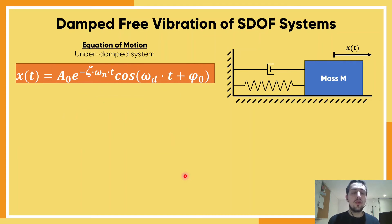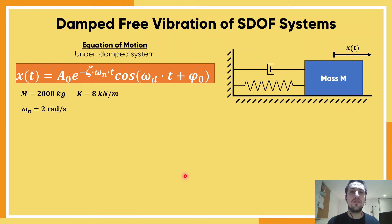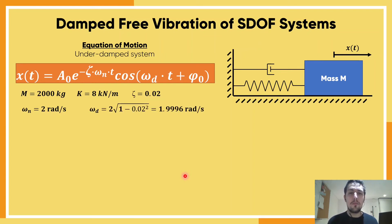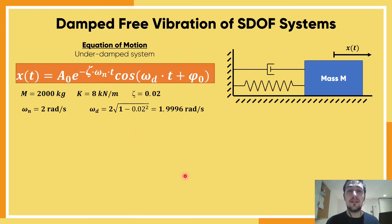Let's look at an example — the same one as the previous video. Mass of 2 tons, stiffness of 8 kN per meter, giving a circular natural frequency of 2 radians per second. If we assume a damping ratio of 2% (0.02), the damped circular natural frequency becomes 1.9996 radians per second. So even though there is a difference, it's not that big — we could reasonably say the damped natural frequency is essentially the same as the undamped one.